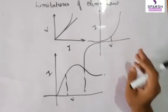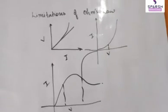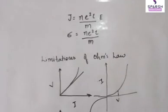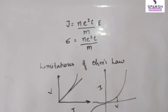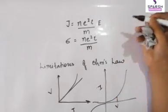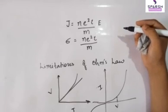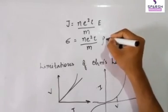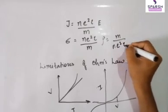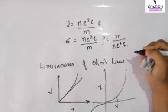Now we are going to start the temperature dependence. Previously we studied the formula J = ne²τ/m × E, meaning sigma (conductivity) = ne²τ/m, by comparing with J = σE. So resistivity ρ = m/(ne²τ). For conductors, the number of free electrons is fixed and cannot change.